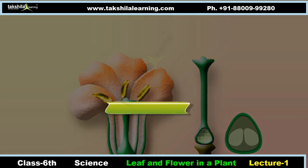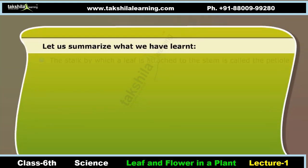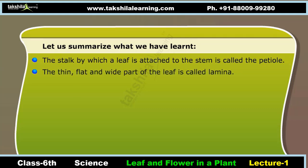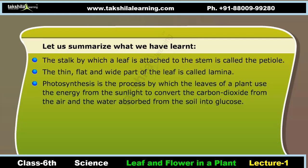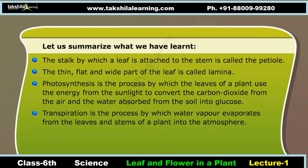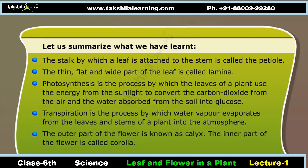Let us summarize what we have learned. The stalk by which a leaf is attached to the stem is called the petiole. The thin flat part of the leaf is called the lamina. Photosynthesis is the process by which the leaves use energy from sunlight to convert carbon dioxide and water into glucose. Transpiration is the process by which water vapor evaporates from the leaves and stems into the atmosphere. The outer part of the flower is the calyx; the inner part is the corolla. The male part of the flower is called the stamen; the female part is called the pistil.